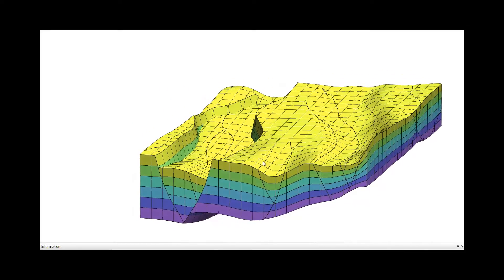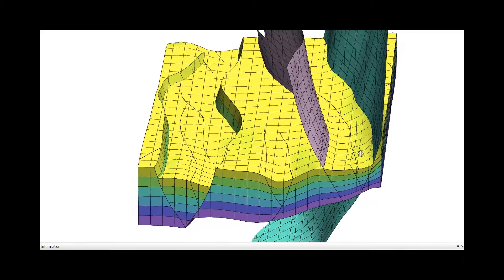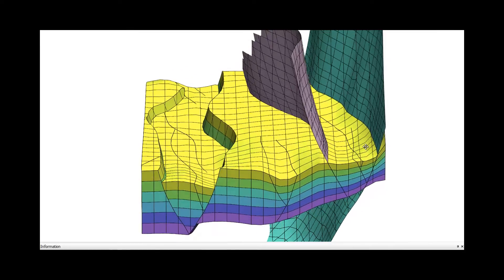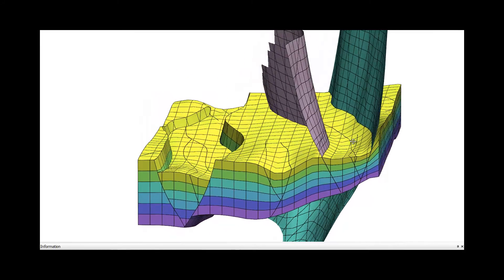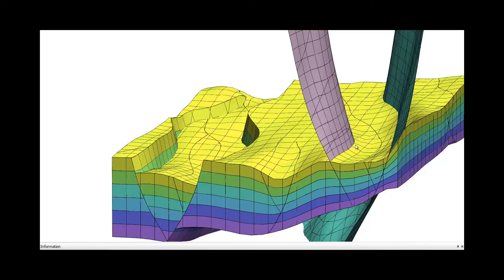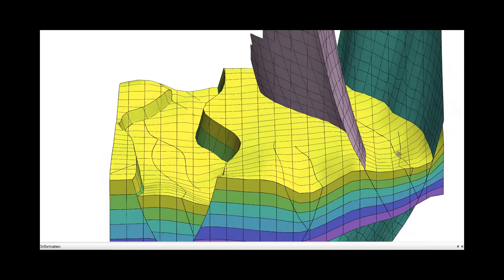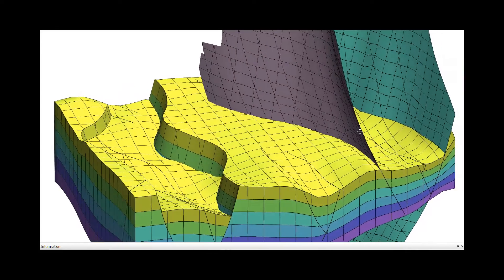The matrix cells are exactly split at the local position of the fracture plane. This method accounts explicitly for the effect of individual fractures on fluid flow and improves the accuracy of flow simulation between fractures and matrix.